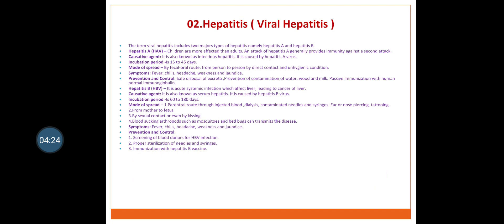The second disease is hepatitis, also known as viral hepatitis. The term viral hepatitis includes two major types: hepatitis A and hepatitis B. Hepatitis A — children are more affected than adults. An attack of hepatitis A generally provides immunity against a second attack. It is also known as infectious hepatitis, caused by hepatitis A virus. Incubation period is 15 to 45 days. Mode of spread is by facio-oral route, from person to person by direct contact and unhygienic conditions.